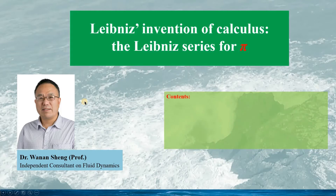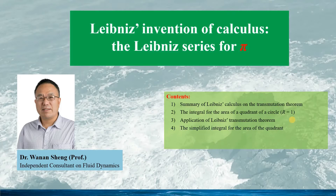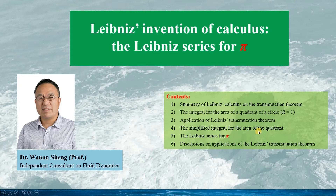In this talk, I will introduce a brief summary of Leibniz's calculus on the transmutation theorem, examine the integral for the area of a quadrant of a circle with radius 1.0, the application of the transmutation theorem, the simplified integral after applying it, the Leibniz series for Pi — a simple and interesting series, although it converges very slowly — and discussions on the applications of the transmutation theorem.